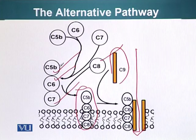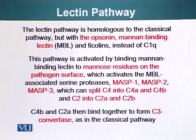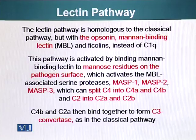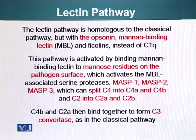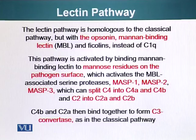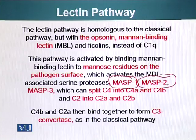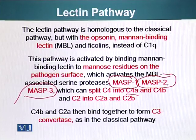Now let's talk about another pathway — the lectin pathway. The lectin pathway is homologous to the classical pathway but uses the opsonin mannose-binding lectin and ficolins instead of C1Q. C1Q is part of the classical pathway but not the lectin or alternative pathway. This pathway is activated by mannose-binding lectin binding to mannose residues on the pathogen surface, which activates mannose-binding lectin-associated serine proteases.